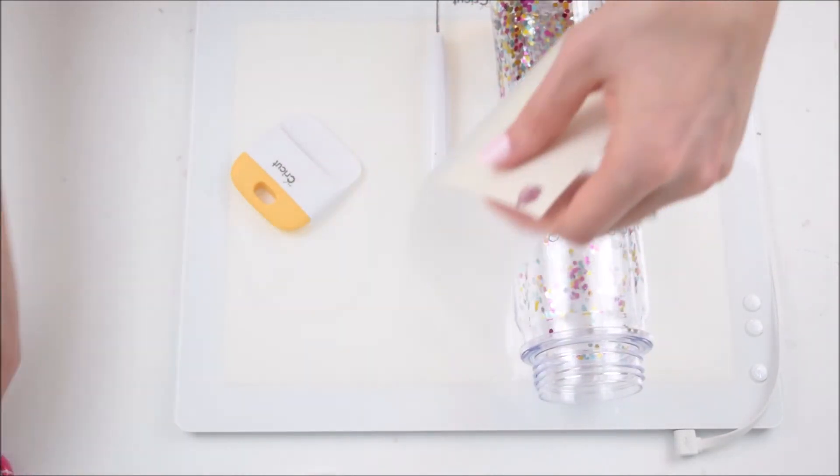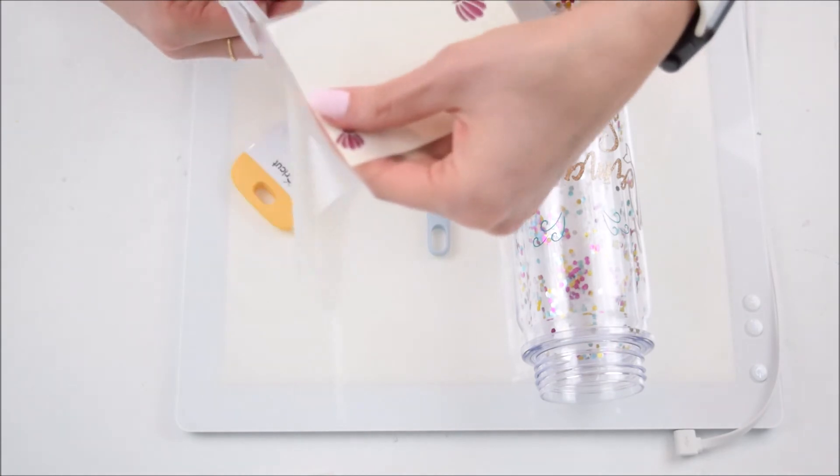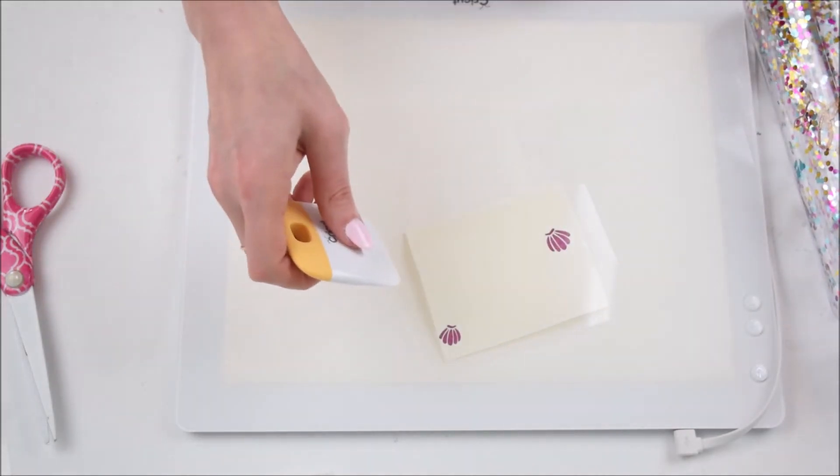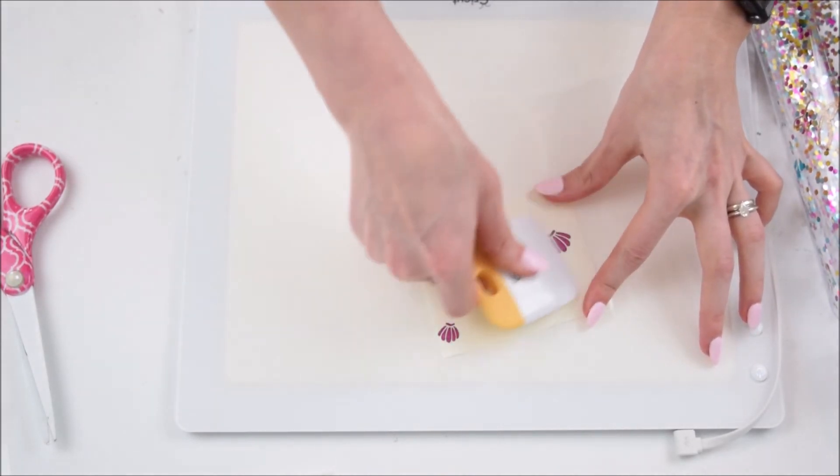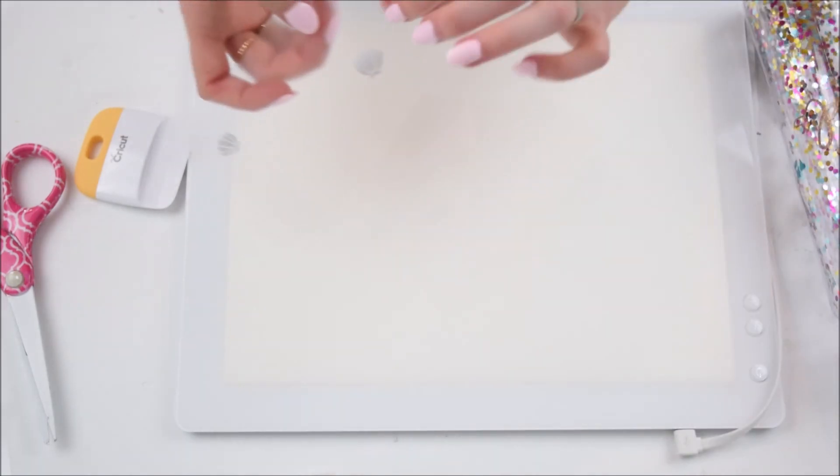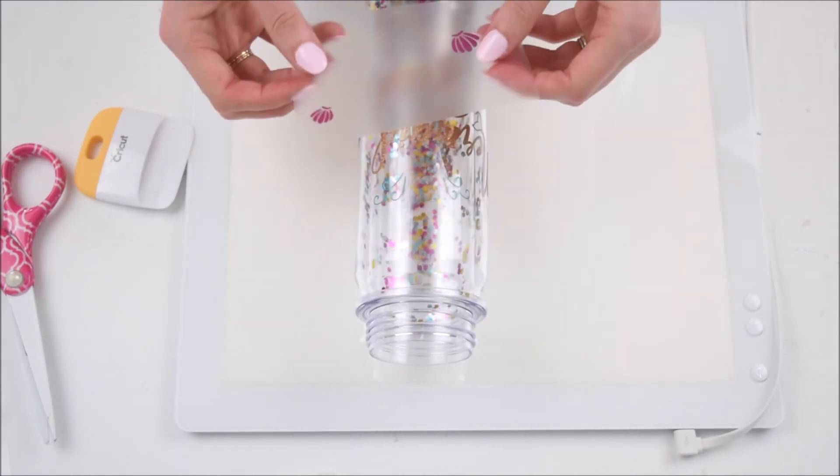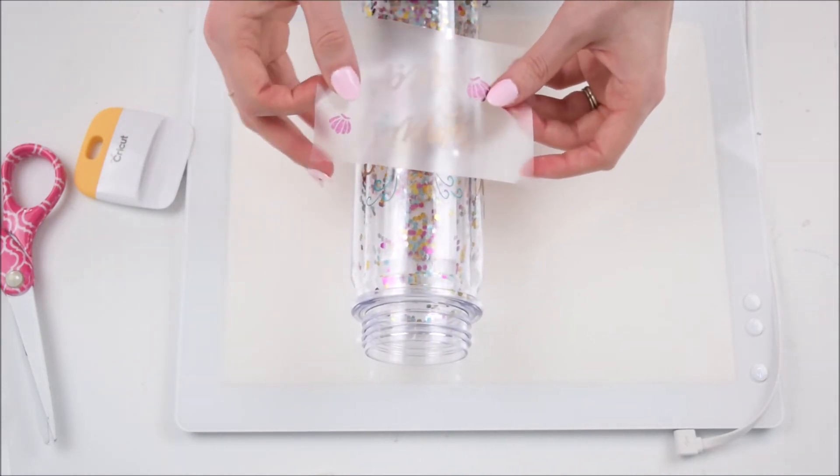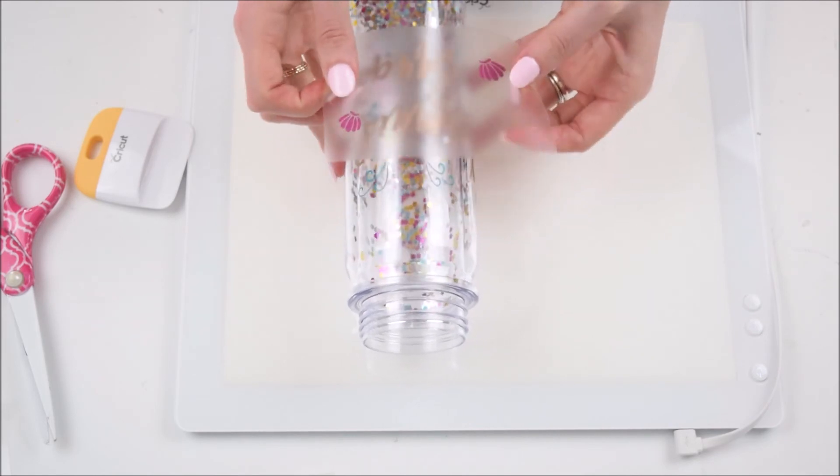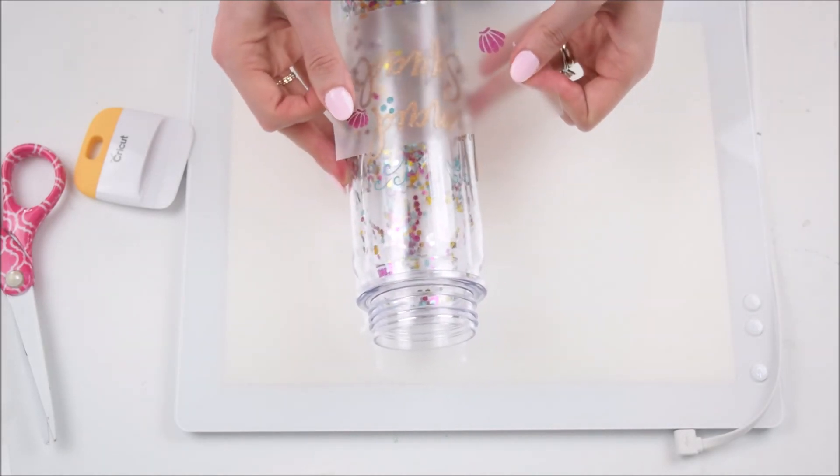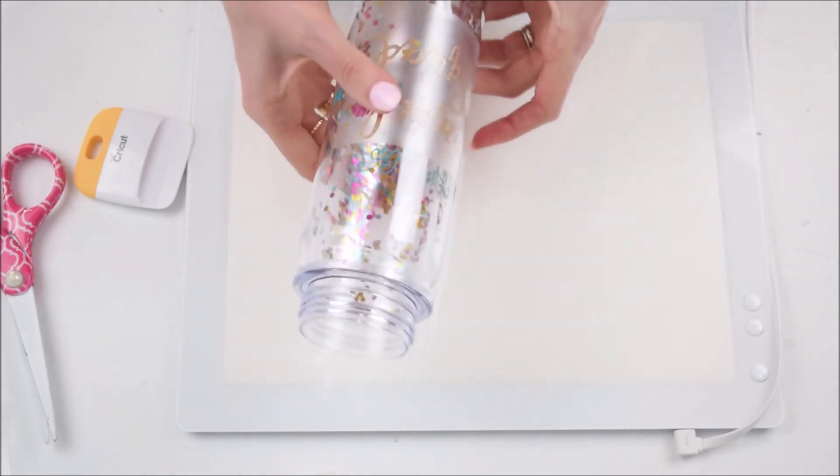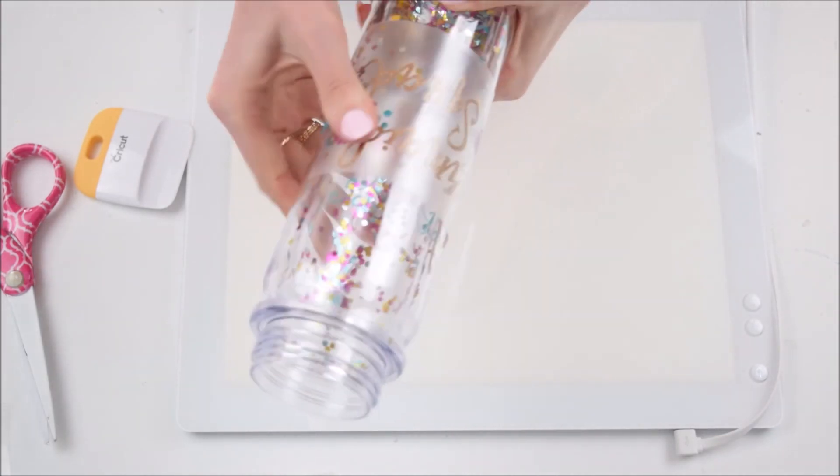Now we're just going to keep repeating until we've got everything onto our water bottle. So I moved on to the little shells next and I'm just placing my transfer tape, burnishing, and then we'll be placing it onto the water bottle again while looking at my design on a screen to help guide me with my placement.